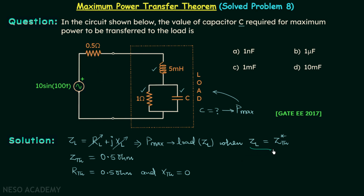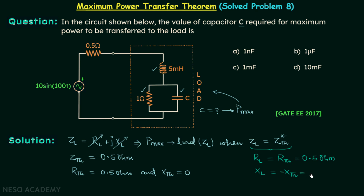Applying the condition for maximum power transfer: RL must equal RTH, so RL equals 0.5 Ohm. Also, XL must equal negative XTH. Since XTH equals 0, XL must also equal 0 Ohm for maximum power transfer.